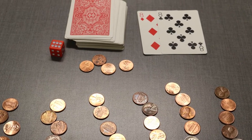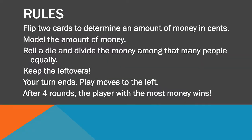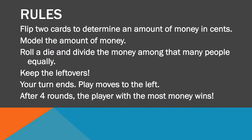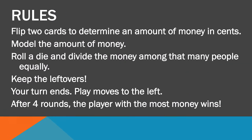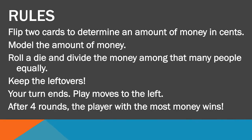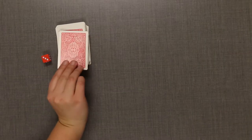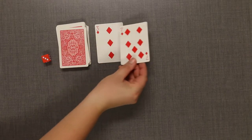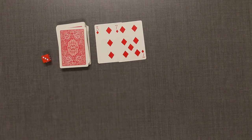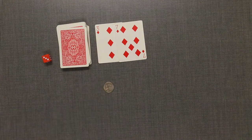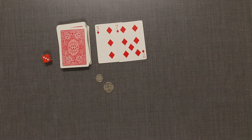Let's go over how to play. On your turn, flip two cards to determine an amount of money in cents. The first card represents the tens digit and the second card represents the units digit. Model the amount of money with your coins. Roll a die — this is the number of people who will share the money.